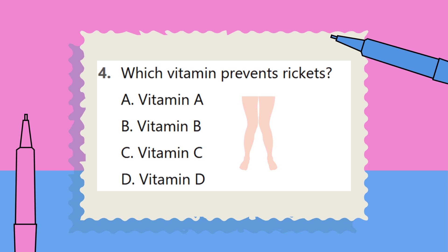Question 4. Which vitamin prevents rickets? A. Vitamin A. B. Vitamin B. C. Vitamin C. D. Vitamin D.